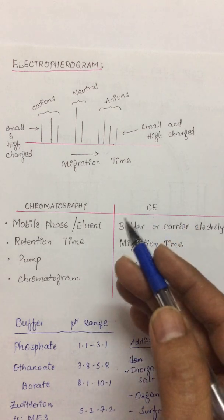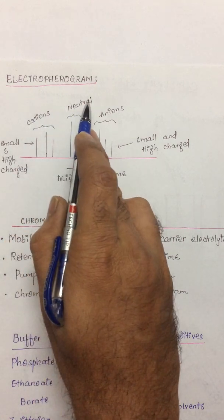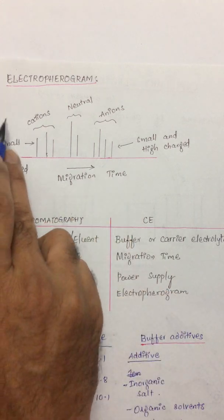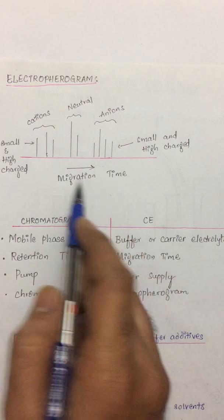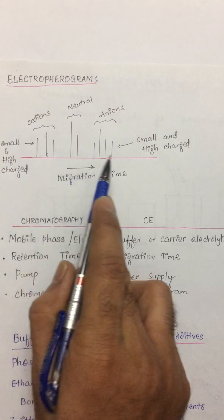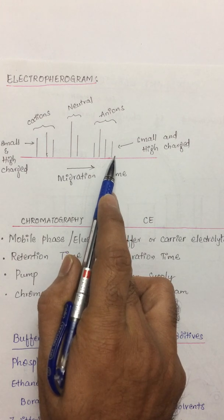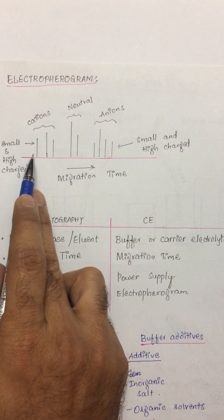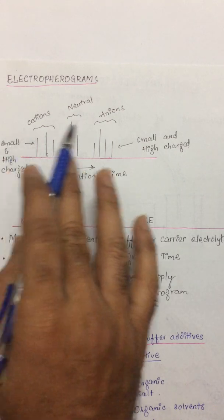Whatever analyte that is coming will be detected and given as a graph. This graph we call an electropherogram. In this electropherogram we can see a migration time is present with absorbance, so it is absorbance versus migration time. The smallest and the highly charged cation will take the least migration time whereas the smallest and highly charged anion will take much more time. The smallest and highly charged cation will spend the least time within the capillary. Neutral species being the median one.